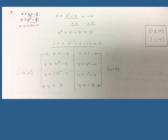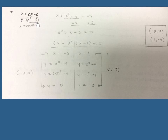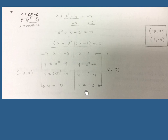Algebraically, you should have gotten negative 2 comma 0 and positive 1 comma negative 3. In the second equation y was already by itself, so you substitute it in: x plus x squared minus 4 equals negative 2. Adding 2 to both sides and factoring gave the x values, which you then substituted back into the second equation to solve for y, writing them as (x, y).